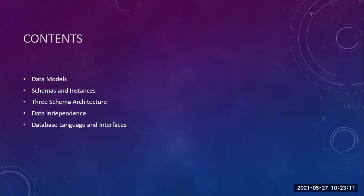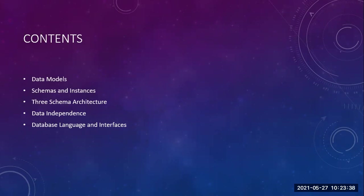So for this part, you are going to have: data models, then schema and instances, three-schema architecture, data independence, and the last one — database languages and interfaces. Last class I covered database languages: DDL, DML, DCL, and DVL — only the introduction and titles. Today you have to cover the data model, schemas, and instances. Schema and instances are going to be with you till the end of your SQL part.